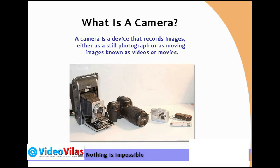If you are looking at different types of cameras, you can see a mobile camera, even a DSLR, and film-making cameras. Each has a lot of different properties and capabilities.